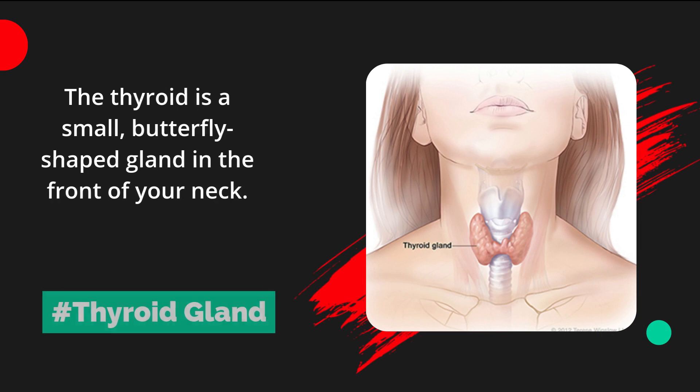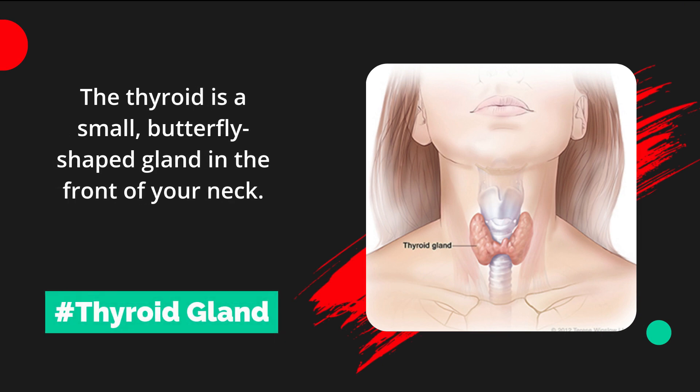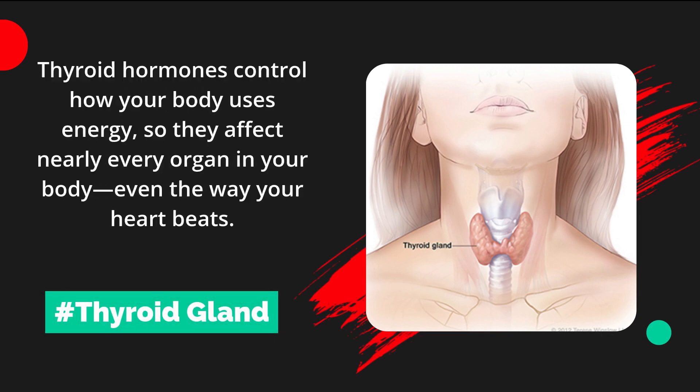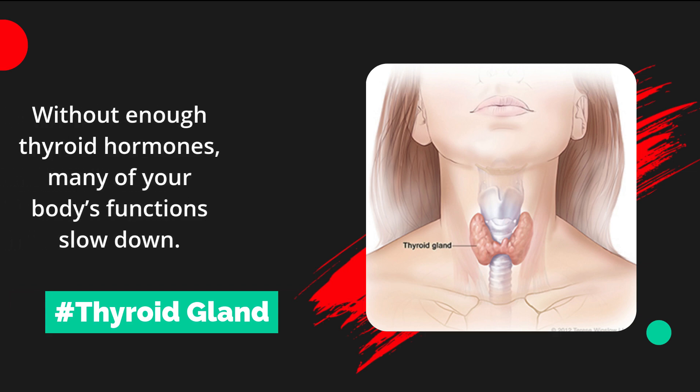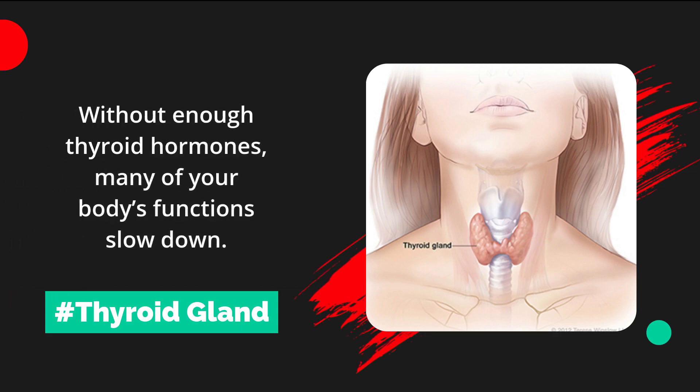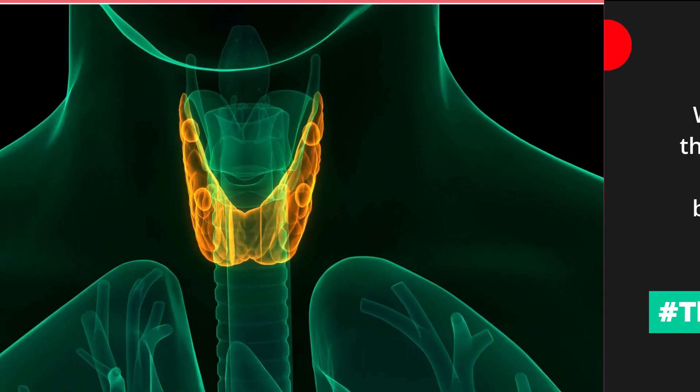The thyroid is a small, butterfly-shaped gland in the front of your neck. Thyroid hormones control how your body uses energy, so they affect nearly every organ in your body, even the way your heart beats. Without enough thyroid hormones, many of your body's functions slow down.